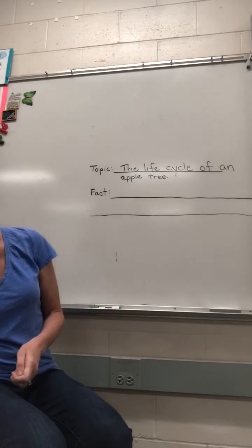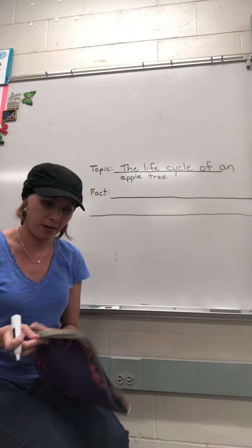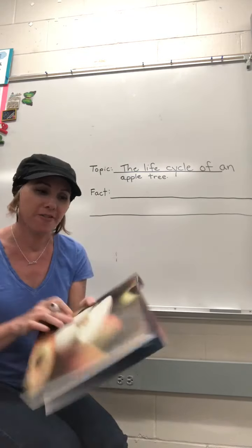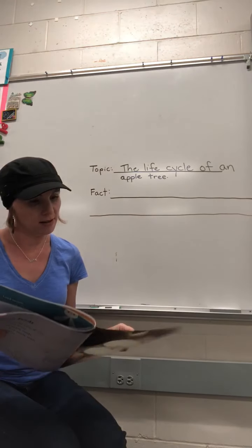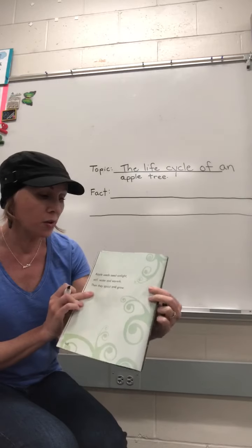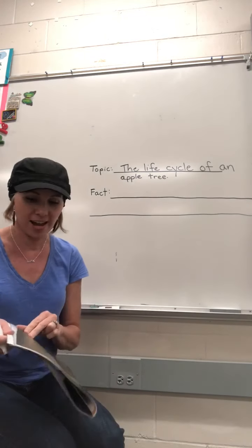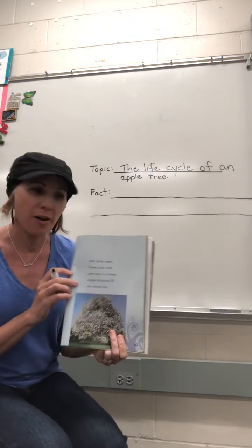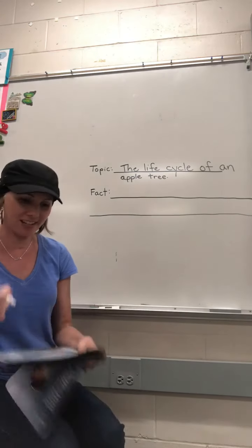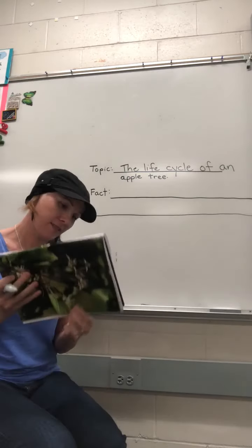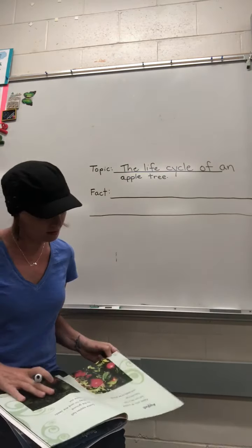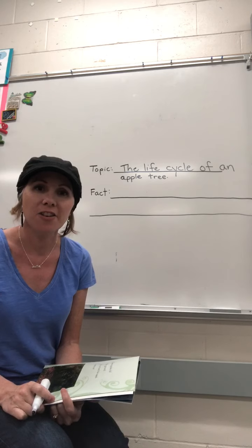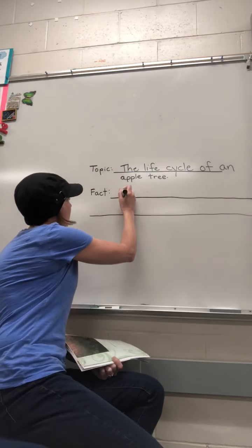Let's go back and look. You can find seeds inside of apples — there's a fact. Apples need sunlight, soil, water, and warmth, then they sprout and grow — there's another fact. After three years, flower buds form on apple trees — there's another fact. So you guys just choose one. When the seeds fall on the ground, then they can become new apple trees — there's another fact.